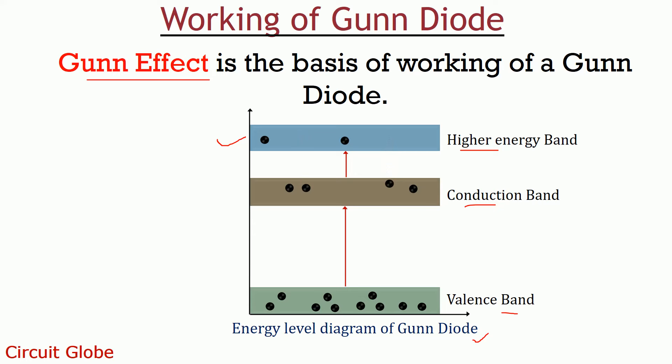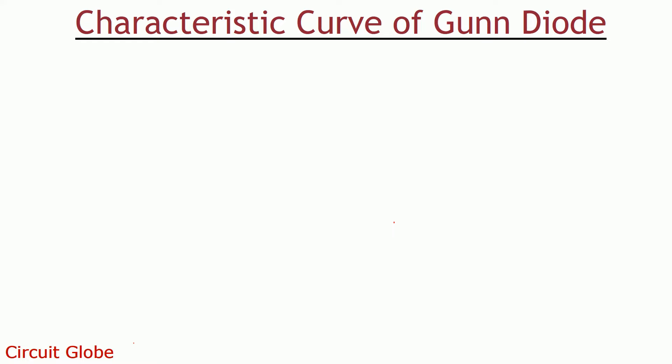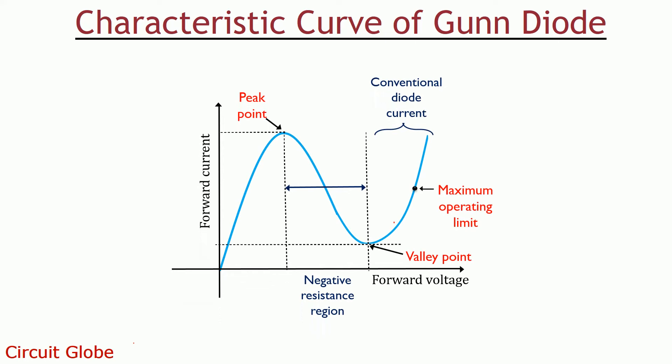Let's now look at the characteristic curve of a Gunn diode. The x-axis represents the forward voltage applied to the device and the y-axis represents the current that flows through the device. Initially, with the increase in voltage, current through the device also increases. But after a peak point, the current starts decreasing, showing the negative resistance characteristic. After reaching a valley point, the current through the device again starts increasing up to its maximum operating limit.